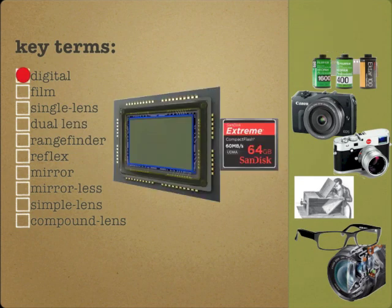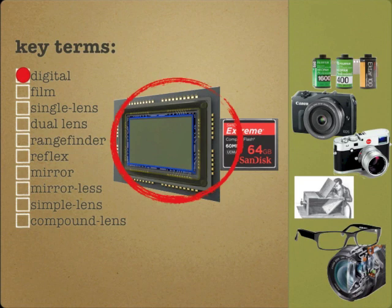Digital. Digital photography captures images by use of an electronic image sensor. The sensor is only able to capture the image — in order to save the image, it must be transferred to a storage device. In this example, we see that the storage device is a compact flash, or CF card. Your digital camera may use an SD card.